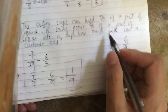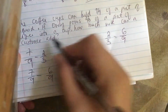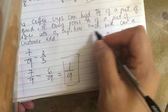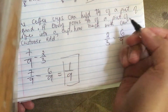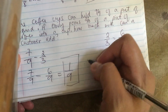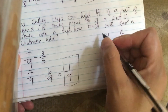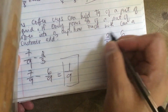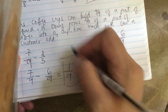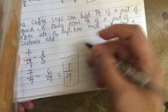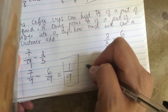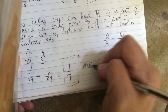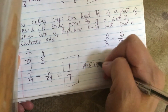So 1 over 9 is the fraction of milk that a customer can add to the coffee.